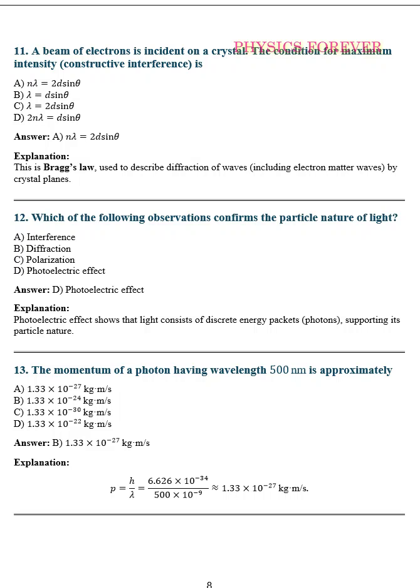Let's start with question number 11. A beam of electrons is incident on a crystal. The condition for maximum intensity, i.e., constructive interference - the correct option A is correct.